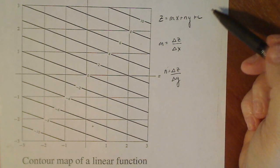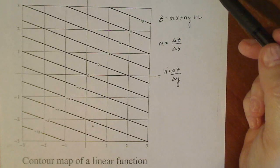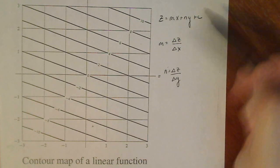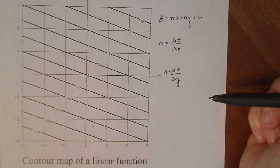And C we calculate by either knowing the Z interception or some point on the plane that we can substitute in once we have M and N.